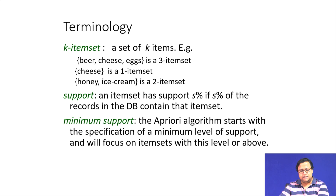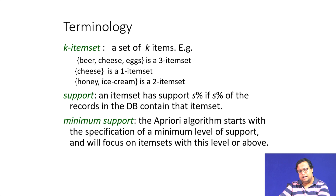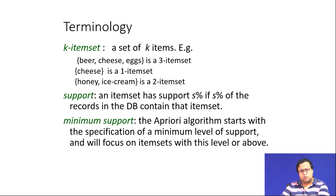What is support? An item set has S percent support, meaning that in the dataset, S percent of transactions contain those items together. What is minimum support? The algorithm starts with the specification of a minimum support — we only use item sets which have a minimum number of occurrences. For example, if my database has 20 million records and I say 1 percent should occur, that means 200,000 times that item set should occur. In practice we do not even say 1 percent — we say 0.01 percent.